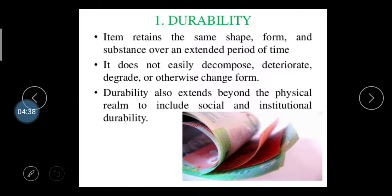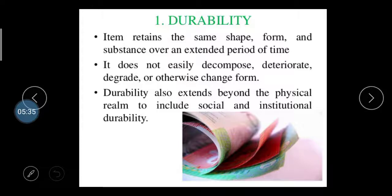First is durability — an item retains the same shape and substance over an extended period of time. In traditional barter, products like rice and wheat were exchanged, but those products are perishable, so their value diminishes over time. Money, however, is durable — after 10 or 15 years you can still use money and get its value. It does not easily decompose, degrade, or change form. Durability also extends beyond physical longevity to include social and institutional durability.